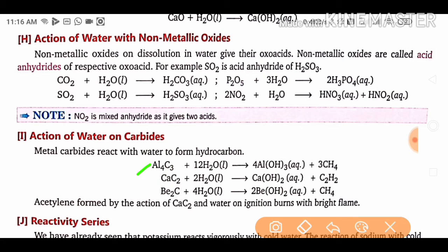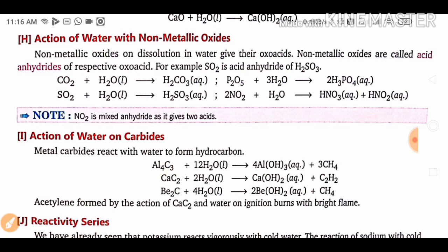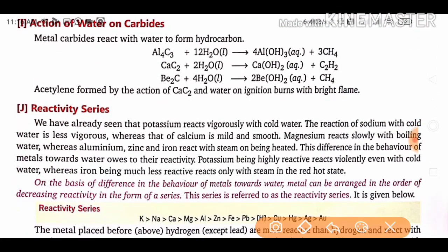Action of water on carbides: metal carbides react with water to form hydrocarbons. Aluminium carbide reacts with water to form aluminium hydroxide and methane. Calcium carbide reacts with water to form calcium hydroxide and acetylene. Barium carbide similarly forms barium hydroxide. Acetylene, formed by the action of calcium carbide and water, burns with a bright flame on ignition.